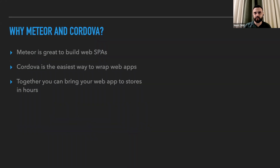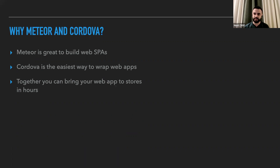Why Meteor and why Cordova? Meteor is great for building web single-page applications, which is what we're building here. Cordova is in my opinion the easiest way to wrap web apps — it's very simple to take web code and publish it as a native app in the stores. We also have plugins so you can access the native environment, like push notifications. With these two technologies we can bring our web app to the stores in a matter of hours, not weeks or months.